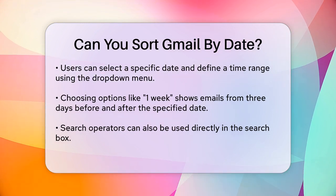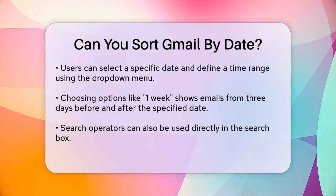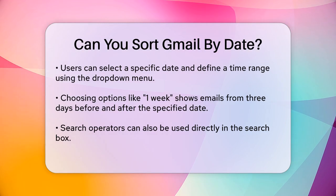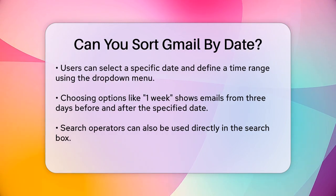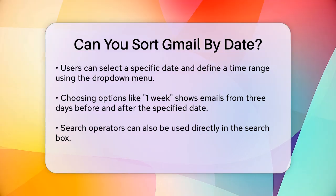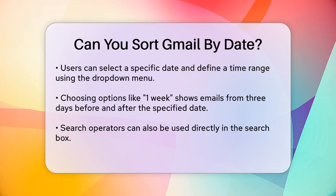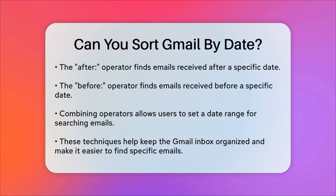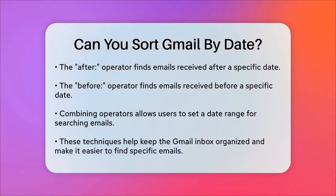Another way to sort emails by date is by using search operators directly in the search box. You can use the after and before operators. For instance, to find emails after a specific date, you would type after:2024/04/07 in the search box. To find emails before a specific date, you would use before:2024/04/07.